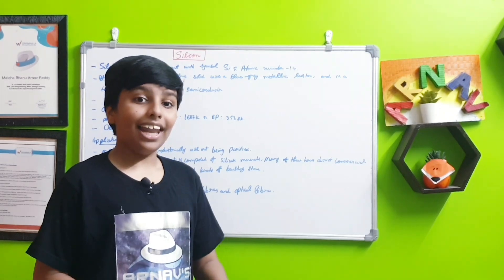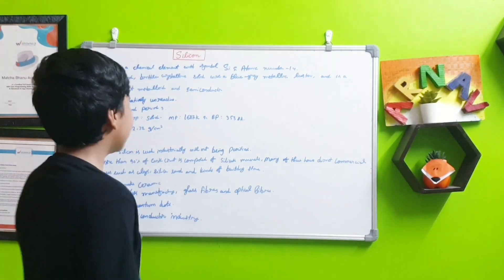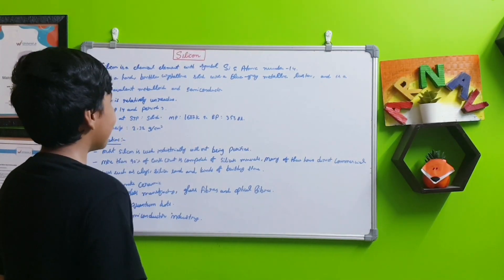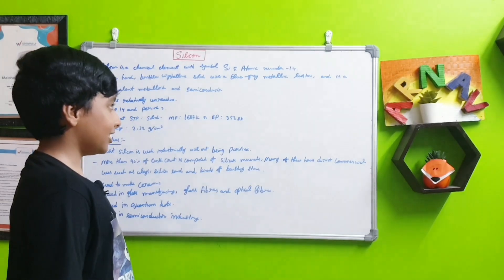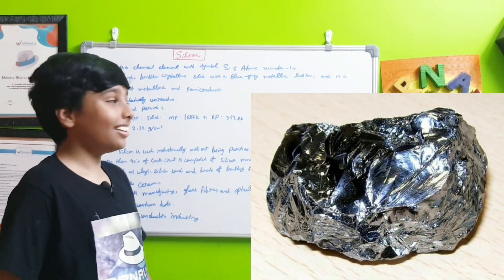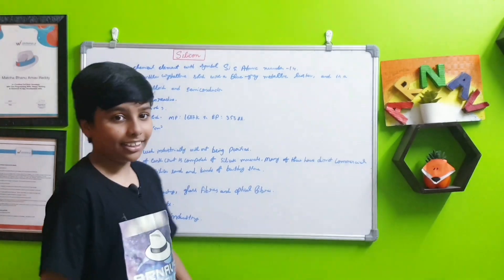It is a hard, brittle crystalline solid with a blue-grey metallic luster. It is a tetravalent metalloid and a semiconductor, mainly used in phones and many other electronic devices.